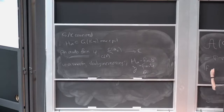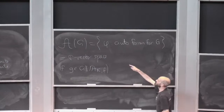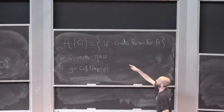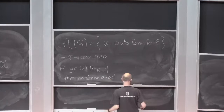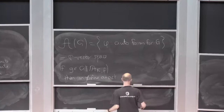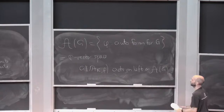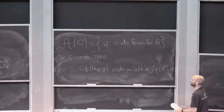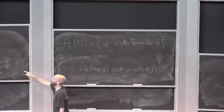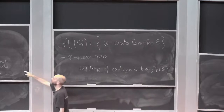If g is in G of the finite Adels, then I can define an action. This group here acts on the left on A(G). This is the whole point — this is supposed to be some huge canonical, massive, infinite-dimensional representation of this adelic group, and the components are supposed to be automorphic representations. So G of the finite Adels acts on the left in a really obvious way.